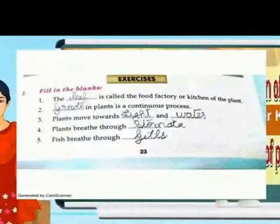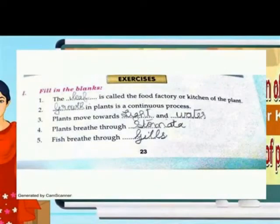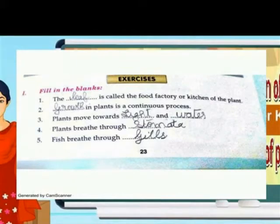2nd Standard Science, Lesson 1: Plants and Animals. Fill in the blanks. Leaf is called the food factory or kitchen of the plant. Growth in the plant is a continuous process.